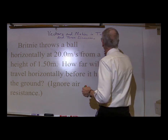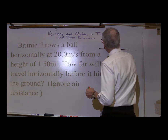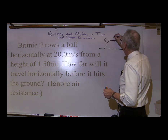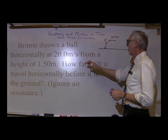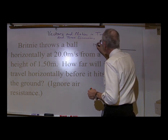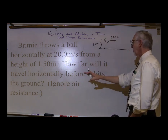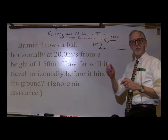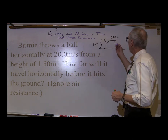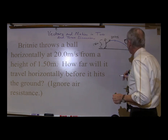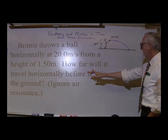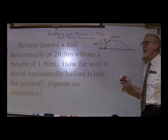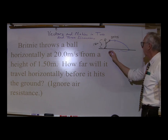We've got Brittany throwing a ball. I'm going to draw a ground level. Here's Brittany throwing a ball horizontally at 20 meters per second from a height of 1.50 meters. The initial height is 1.50 meters above the ground. What's the ball going to do? We expect it to move over like this and come down and hit the ground. The question is asking how far will it travel horizontally — we're looking for that distance, the horizontal change in position.